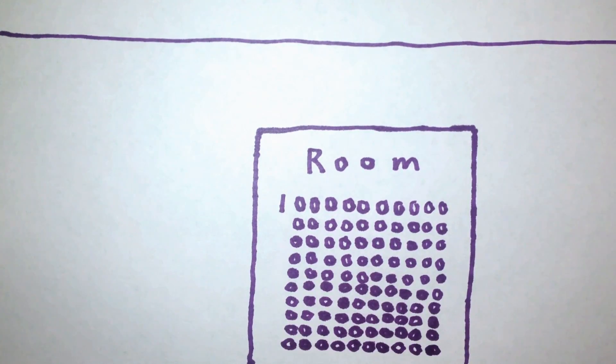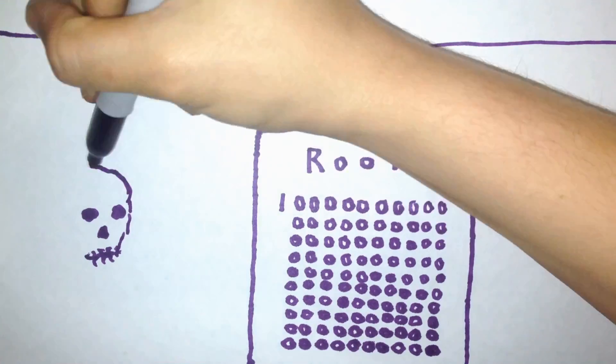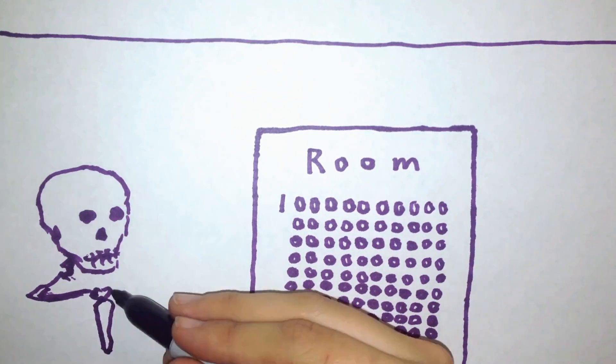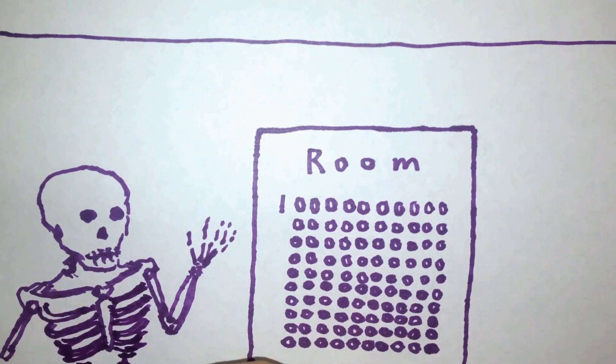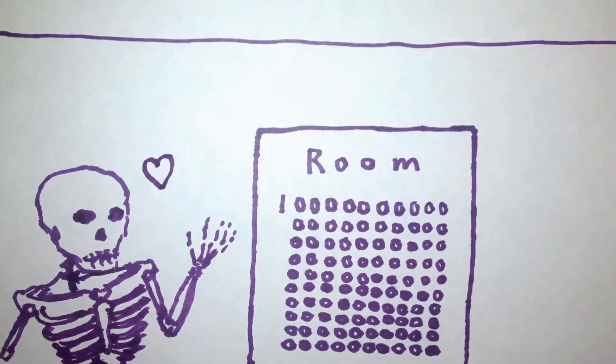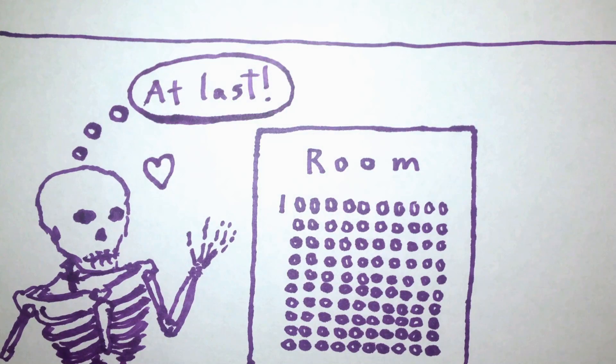For example, a guest who'd reserved room a googol would never be able to walk that length of hallway in their lifetime. And since even electricity travels at a finite speed, if you tried to forward a call from the lobby to a googol, it would take a very, very long time for the message to arrive.